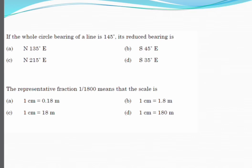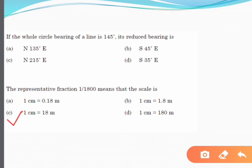The representative fraction 1/1800 means the scale is? The correct answer is 1 centimeter equals 18 meters. RF = 1/1800 means one unit on the map represents 1800 units on the ground. Therefore, 1 centimeter on the map equals 1800 centimeters on the ground, which is equal to 18 meters.